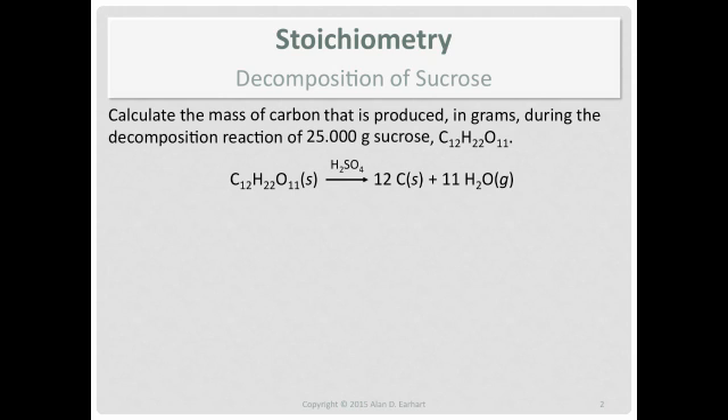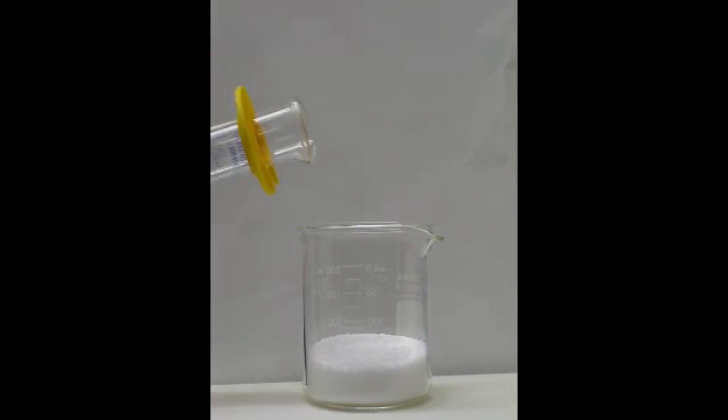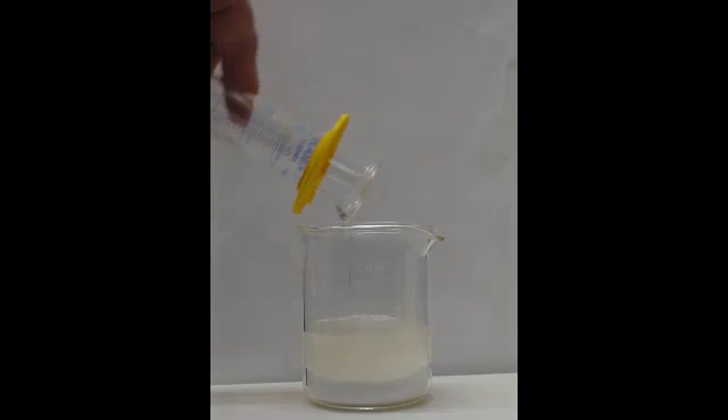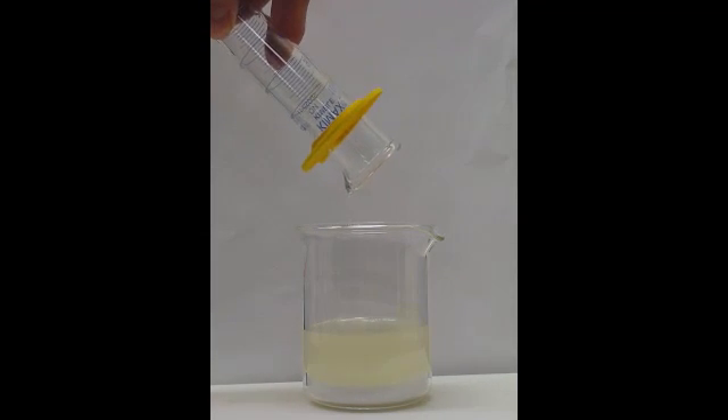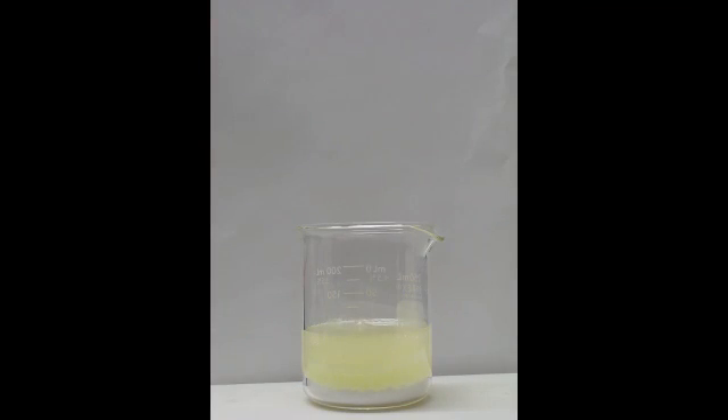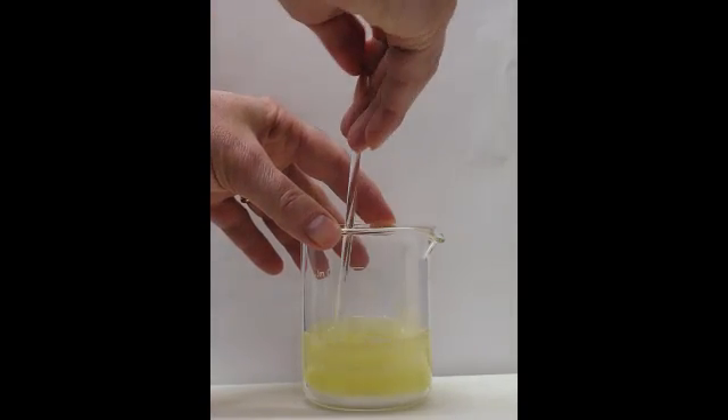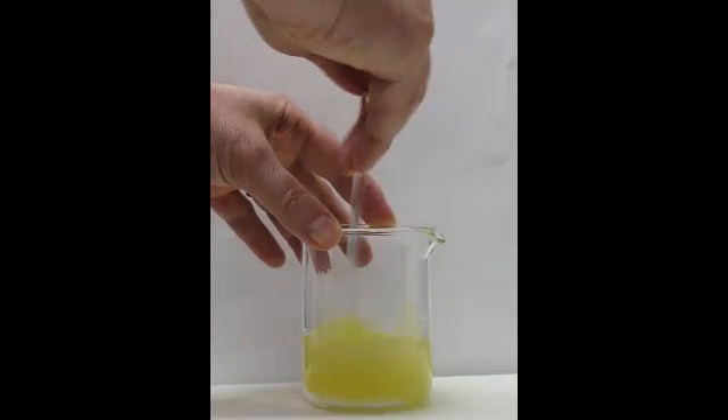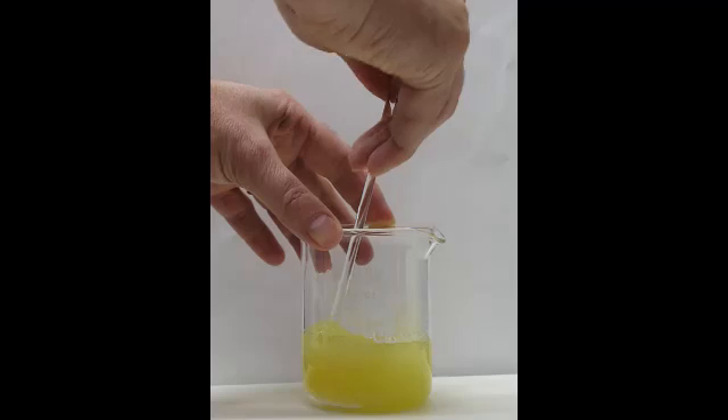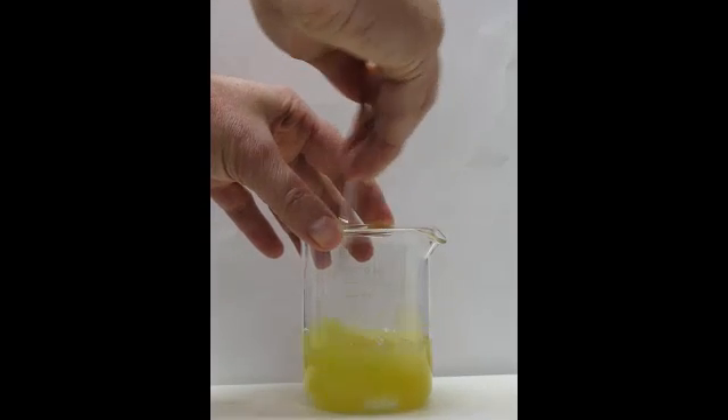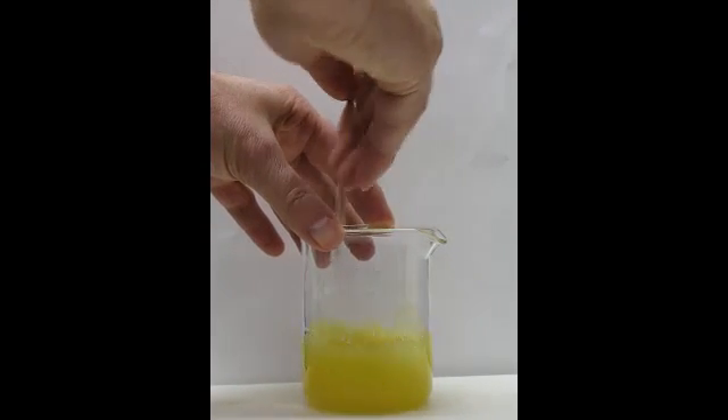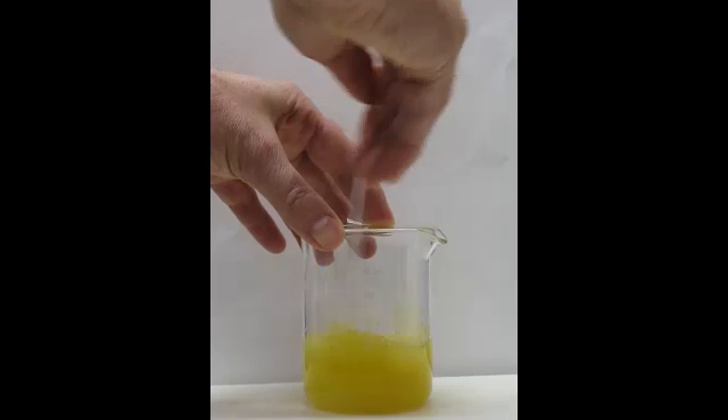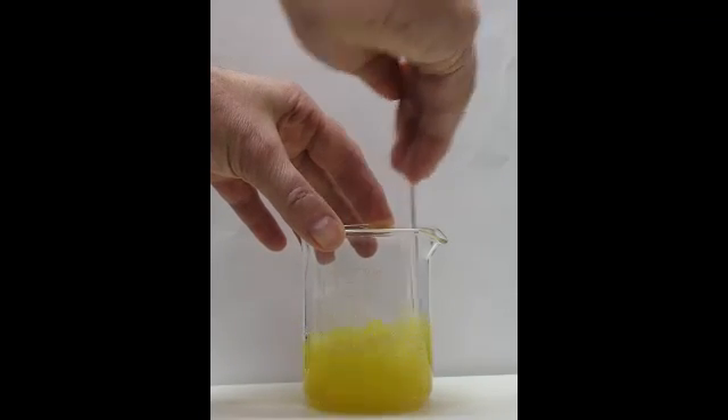I have sucrose which I've ground up into a powder and I've just added concentrated sulfuric acid. It's starting to turn yellow because it's starting to react. Now I'm mixing it, it's turning into really thick gooey stuff, but I want to get the sulfuric acid and the sucrose mixed together really well so it can react properly.